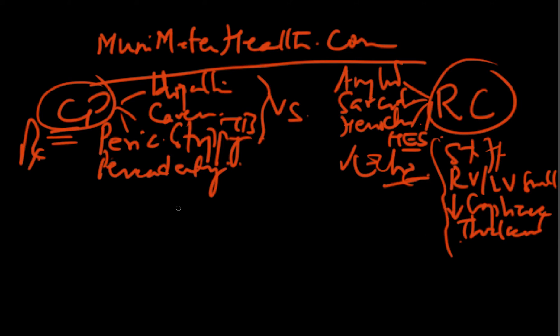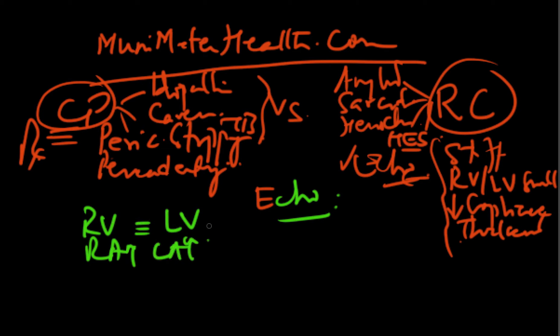Now let's understand what are the echo features. In constrictive pericarditis, if you were to look at on an echo, the RV pressures will be equal to the LV pressures. RA will be obviously increased and LA will be increased, but the fact is RV equals LV in all pressures, whereas in restrictive cardiomyopathy, the LV pressures will be much higher than the RV pressures. A very important distinguishing feature.